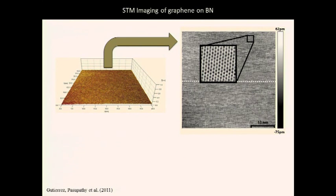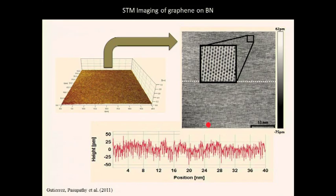STM results from the Pop-Pasupathy group at Columbia: graphene placed on boron nitride shows, over areas of tens of microns, it is completely flat — roughness of only a few sub-angstroms, presumably the STM resolution limit. A beautiful hexagonal graphene network is visible, barely disturbed by the surface and extended over quite a large area. This is one of the really great substrates for providing graphene with the best electronic properties.